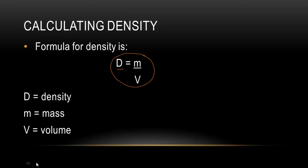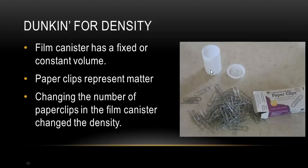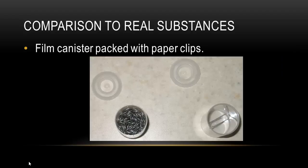In the Duncan for Density lab, we modeled how changing the amount of matter in a container changes the density of an object. Our containers were these film canisters and we used paper clips to represent matter. When we changed the number of paper clips in our containers, that changed the density of the film canister. One paper clip inside a film canister represented an object that is less dense, while a container packed full of paper clips would obviously be more dense.